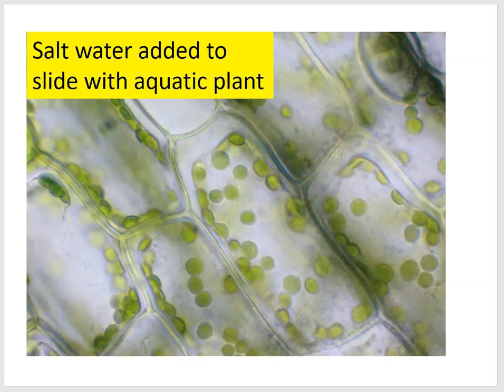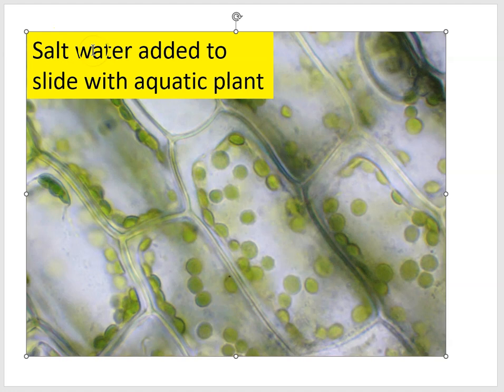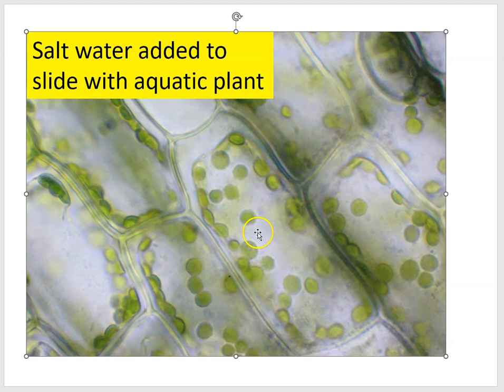That picture was taken by placing a freshwater aquatic plant leaf on a slide under the microscope. When salt water is added, something interesting happens. Because there's more water concentration inside the cell than in the surrounding salt water, osmosis occurs — water moves from areas of high concentration to low concentration. As water leaves, the cell membrane begins to pull away from the rigid cell wall.